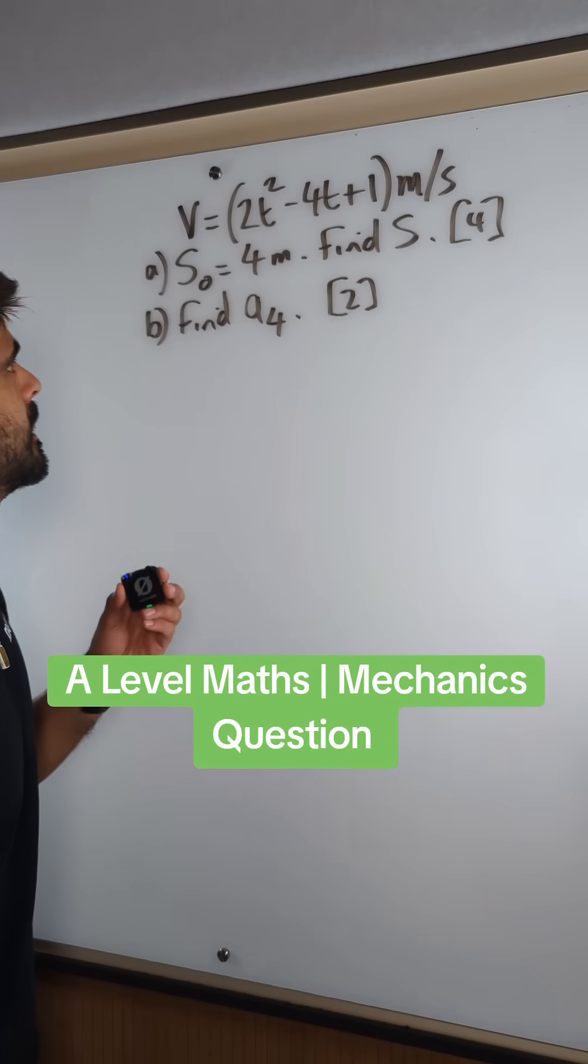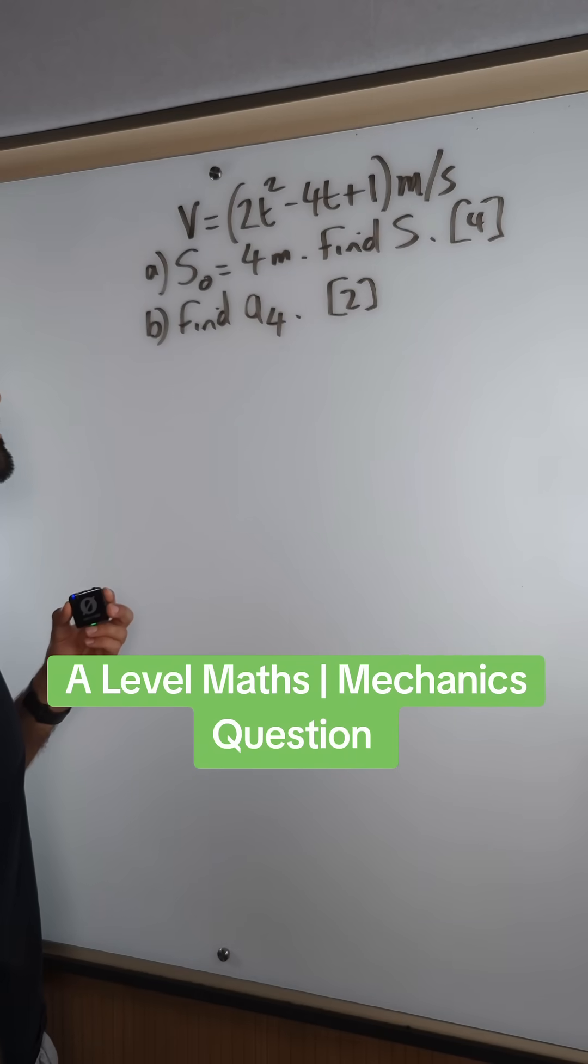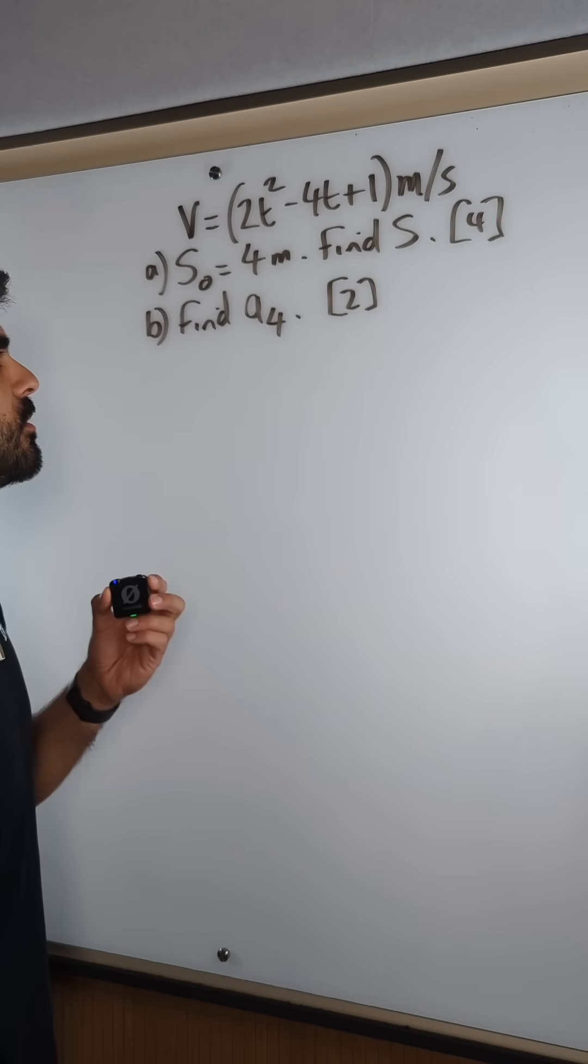Don't be neglecting mechanics silly boy. So we've got the velocity of a particle is 2t squared minus 4t plus 1 meters per second. The initial displacement is 4. Find the value of s.